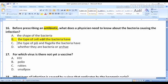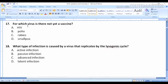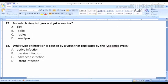Question 17: For which virus is there not yet a vaccine? Many viruses don't have a vaccine yet. All of these have vaccines except one, except AIDS causing agent, or HIV.